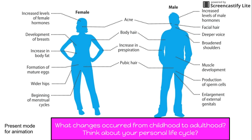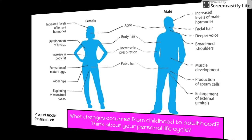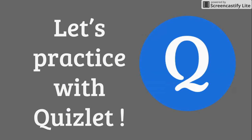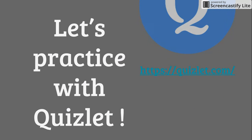For females, there are increased levels of female hormones, development of breasts, increase in body fat, formation of mature eggs, wider hips, and the beginning of their menstrual cycle.